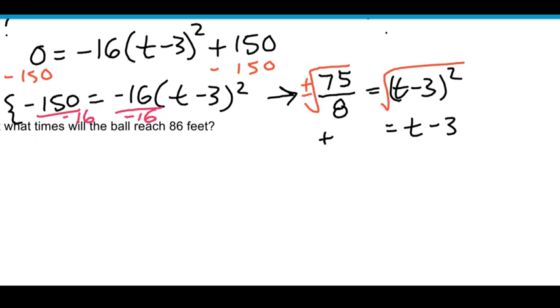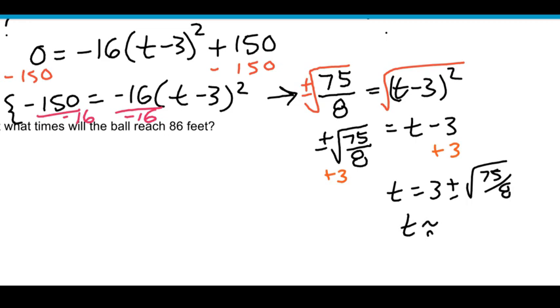And on the left side, I could reduce this radical, but I'm going to go ahead and just go right into my calculator after this next step because we just want to get an estimate for time. So I'm just going to add 3 to both sides to get t. And then we have t is equal to 3 plus and minus, let me get that minus on there, square root 75 over 8. And then if you use your calculator here, you're going to get two numbers, one with the plus sign and one with the minus sign. And you're going to get approximately 6.06 seconds.